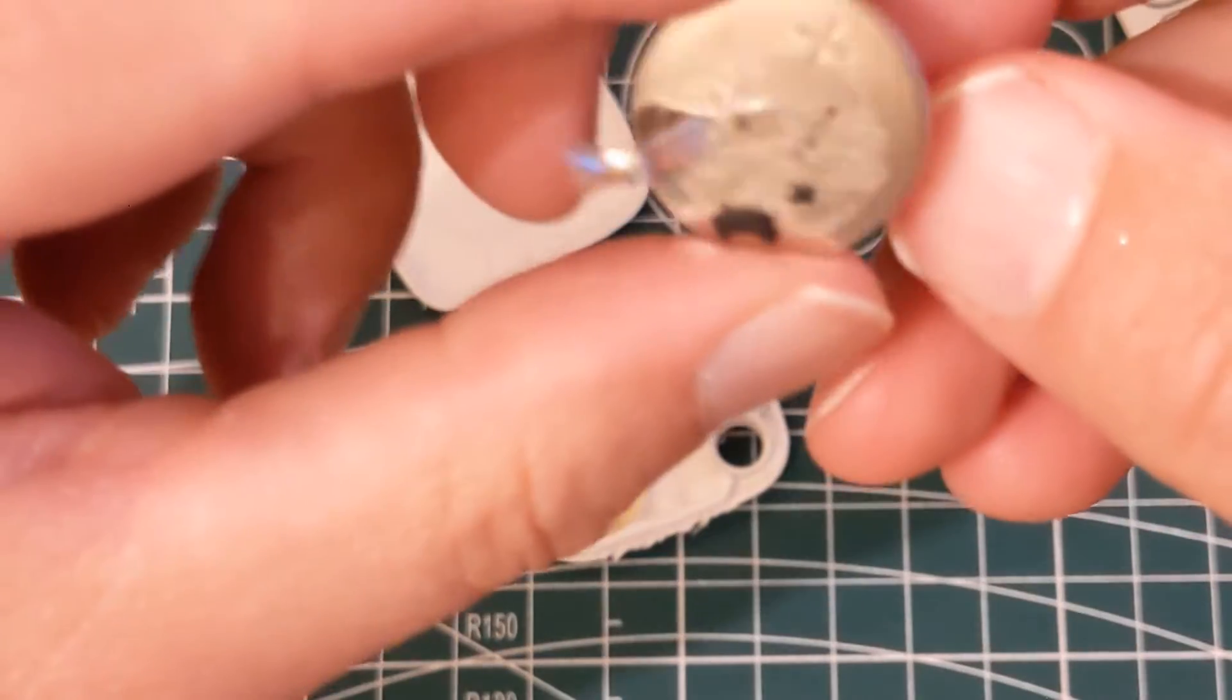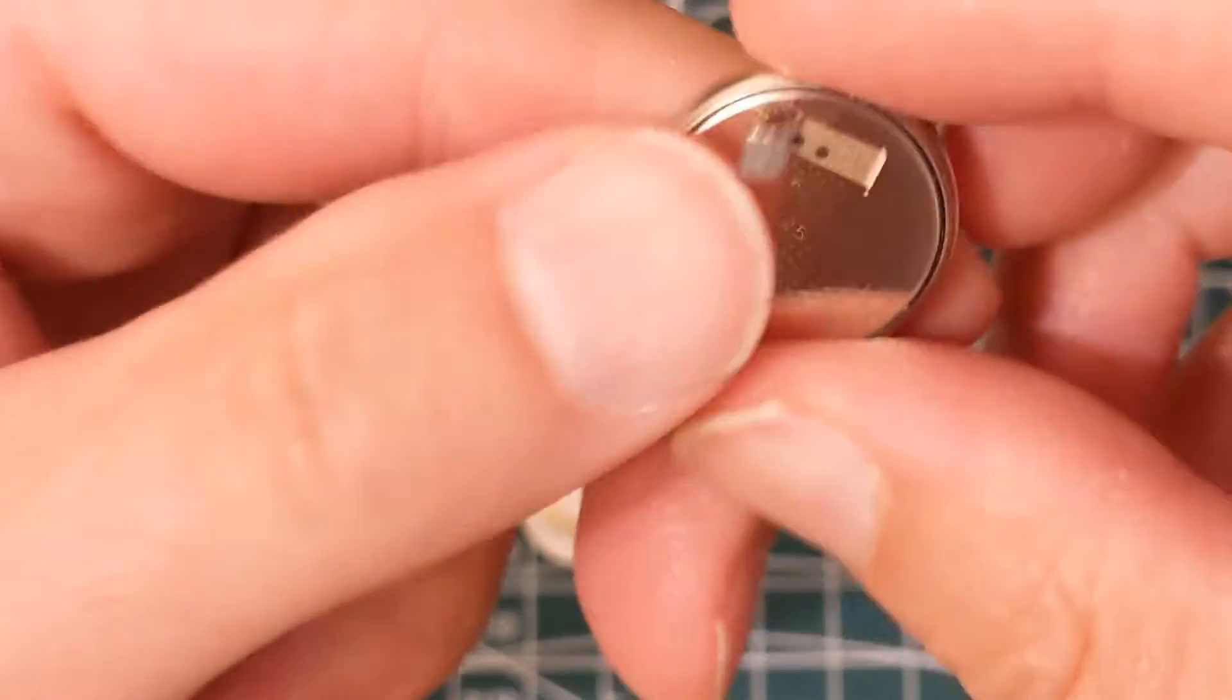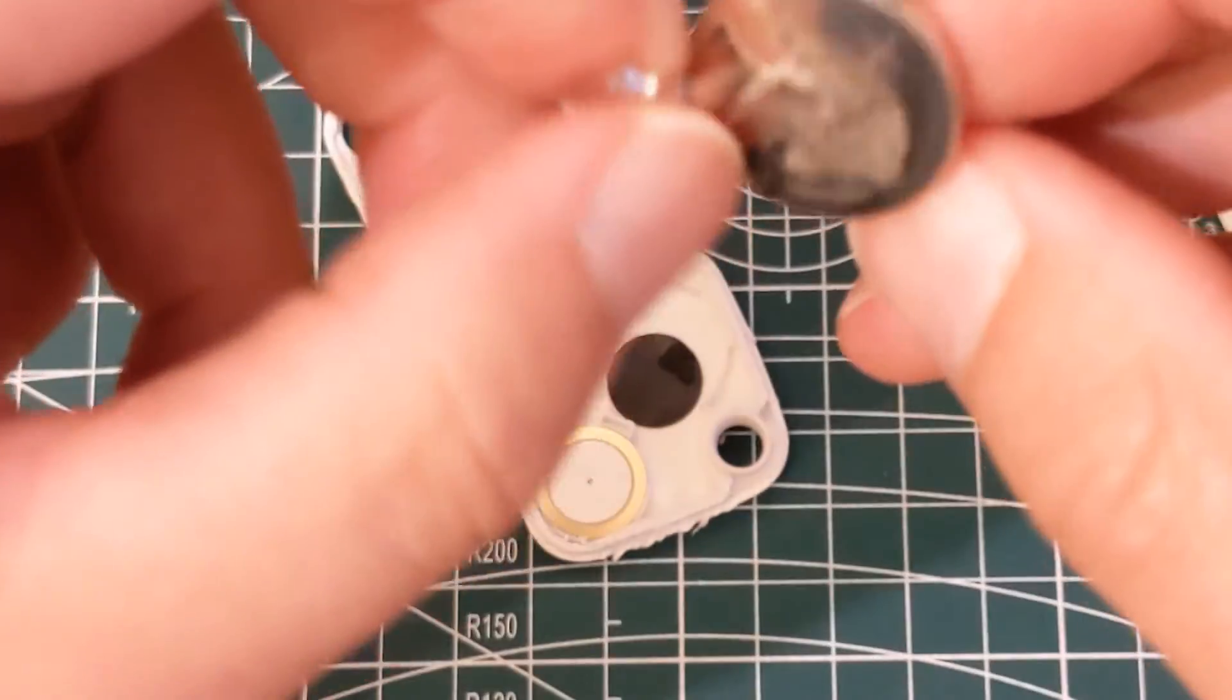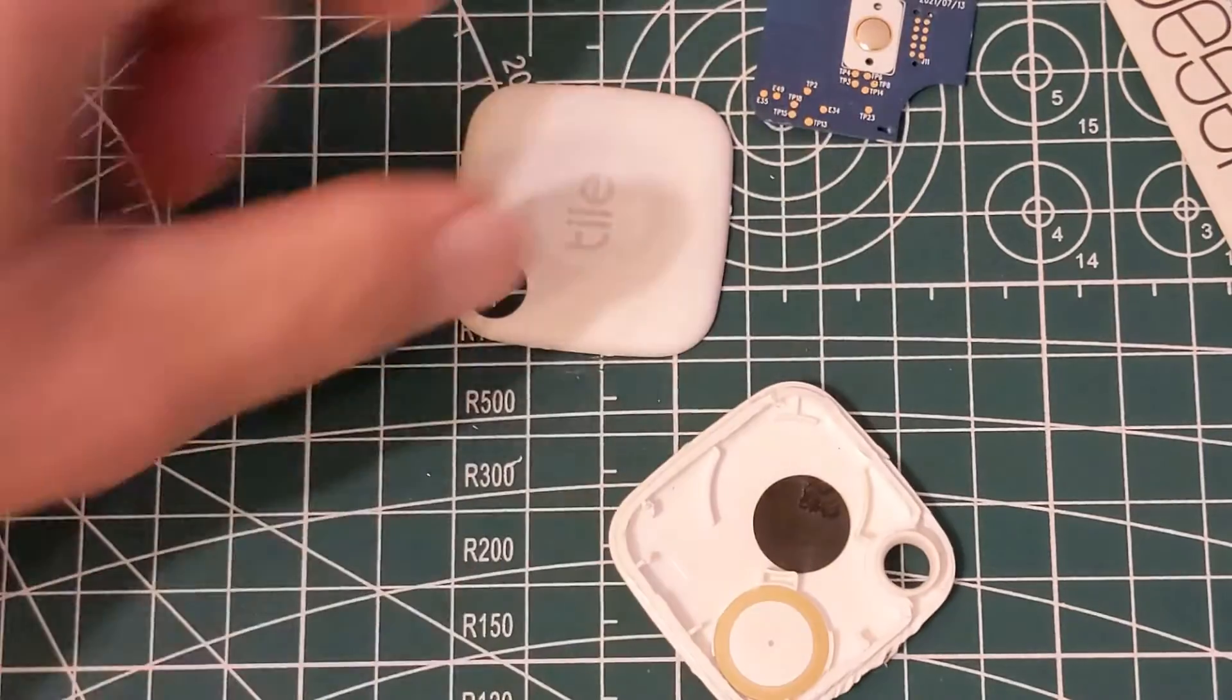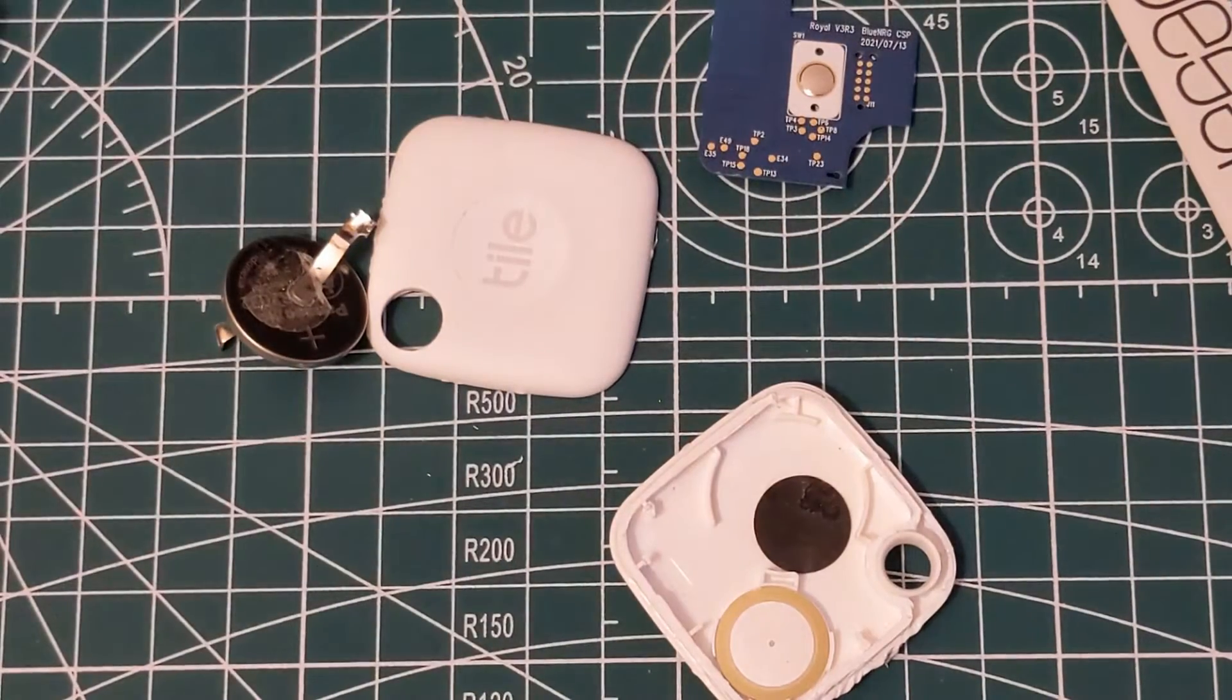There we go, so I'll break off these tabs and I'll be able to use that battery in something else, probably, if I can get it off there. Oh well, salvage it if I can. But that's the end of this video. One Tile taken apart, ready to go to electronics waste. Thanks for watching, see you in the next video.